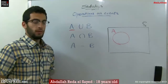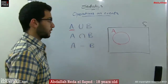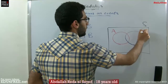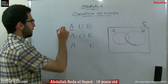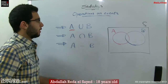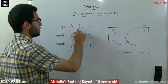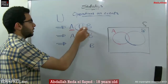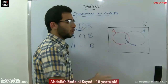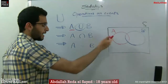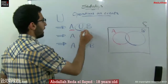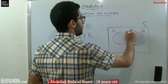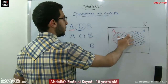Here we have operations on events. What if we have different events in one sample set? For example, we have A and also we have B. The first operation is A union B. This is not a U — this is a symbol that represents the union of two events. When we say A union B, we mean the area which includes what's inside A and what's inside B. A union B means A and B together.